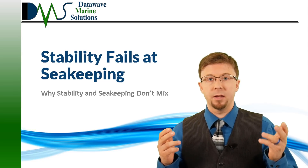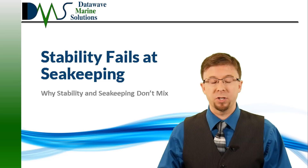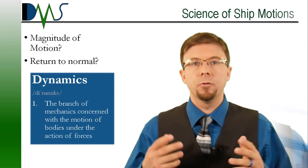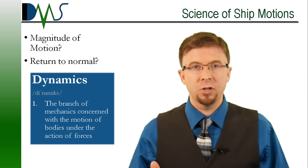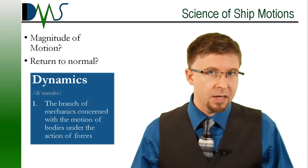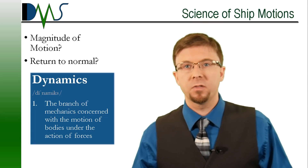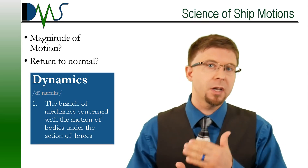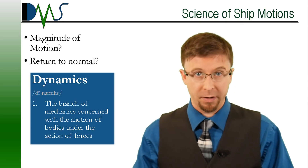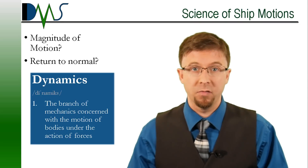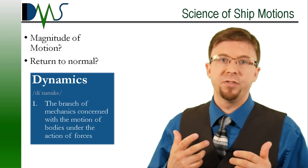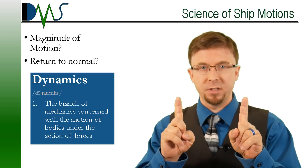Stability and seakeeping developed as two different approaches to answer that question, and neither of them were completely successful. To talk about this, we first need to talk about the science of ship motions. To really guarantee safety, naval architects first needed methods to predict ship motions. This ventured into the field of dynamics, which is predicting the behavior of moving objects. Dynamics refined the subject of ship motions into two fields of study.